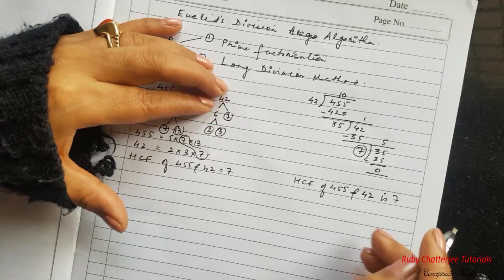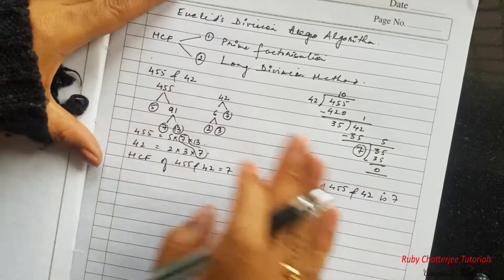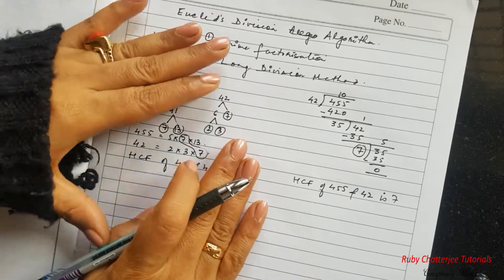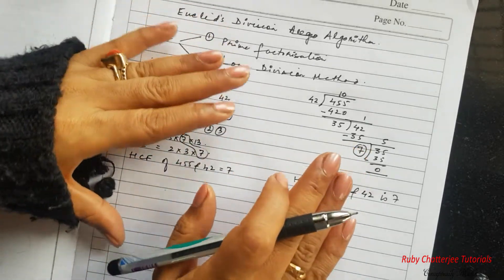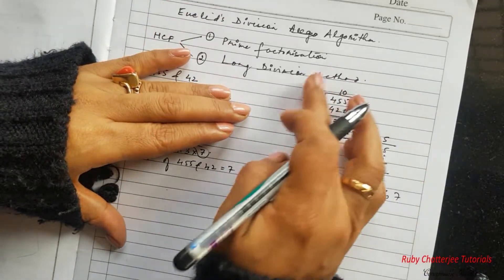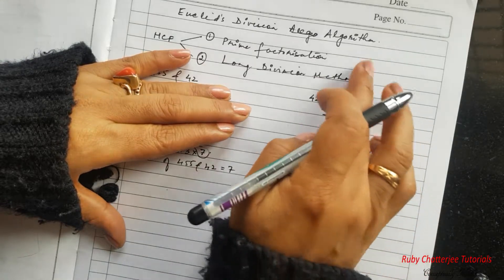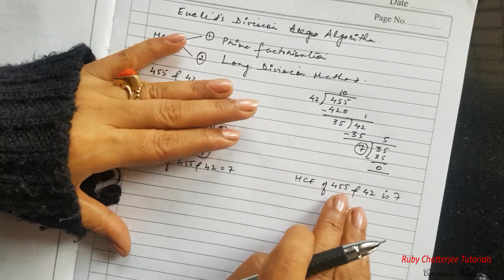So you can see that both are same. But now we will keep the prime factorization method aside and try to understand and analyze the long division method to find the HCF.